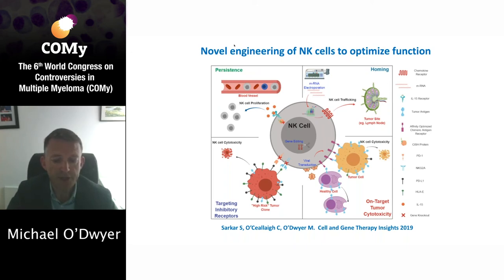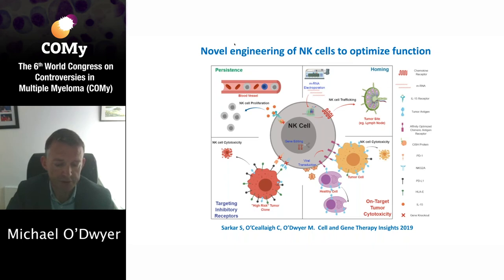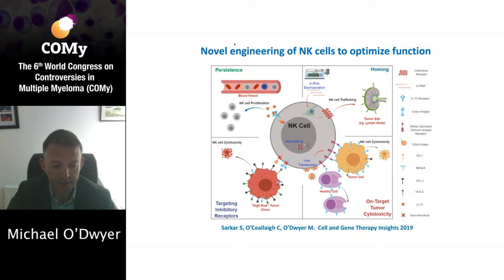Many different modifications can be engineered into NK cells, such as high-affinity FC receptors to enhance the activity of monoclonal antibodies, chimeric antigen receptors, or deletion of checkpoint receptors to reduce inhibitory influences. It's also possible to express cytokines constitutively to improve persistence and chemokine receptors to improve homing. Now, with CAR T cells very close to receiving regulatory approval, one might ask whether we really need alternative approaches with modalities such as NK cells.